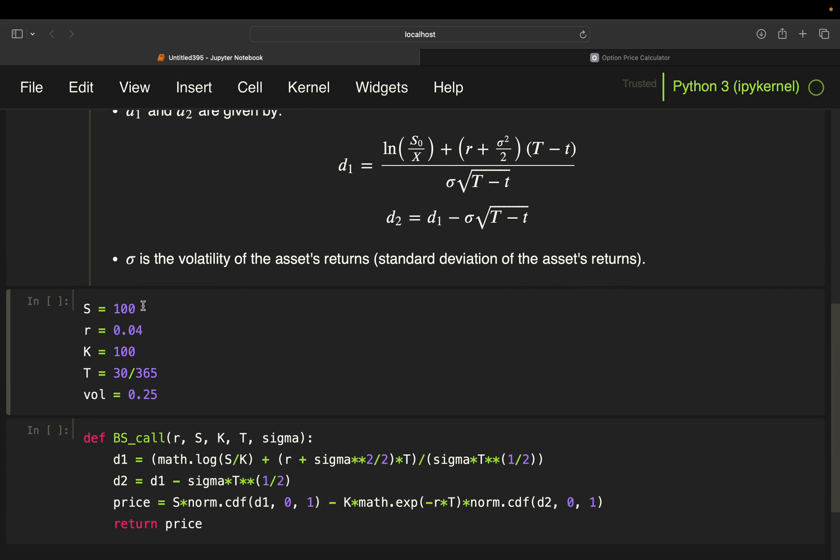I'm using the exact same assumptions we did in the last video. So, we got a current stock price of 100, we got a risk free rate of 4%, we got a strike price of 100, we got a time to maturity of one month,